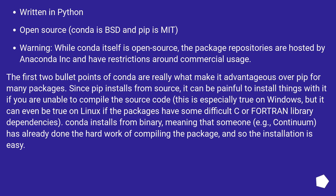The first two bullet points of conda are really what make it advantageous over pip for many packages. Since pip installs from source, it can be painful to install things with it if you are unable to compile the source code. This is especially true on Windows, but it can even be true on Linux if the packages have some difficult C or Fortran library dependencies. Conda installs from binary, meaning that someone — for example, Continuum — has already done the hard work of compiling the package, and so the installation is easy.